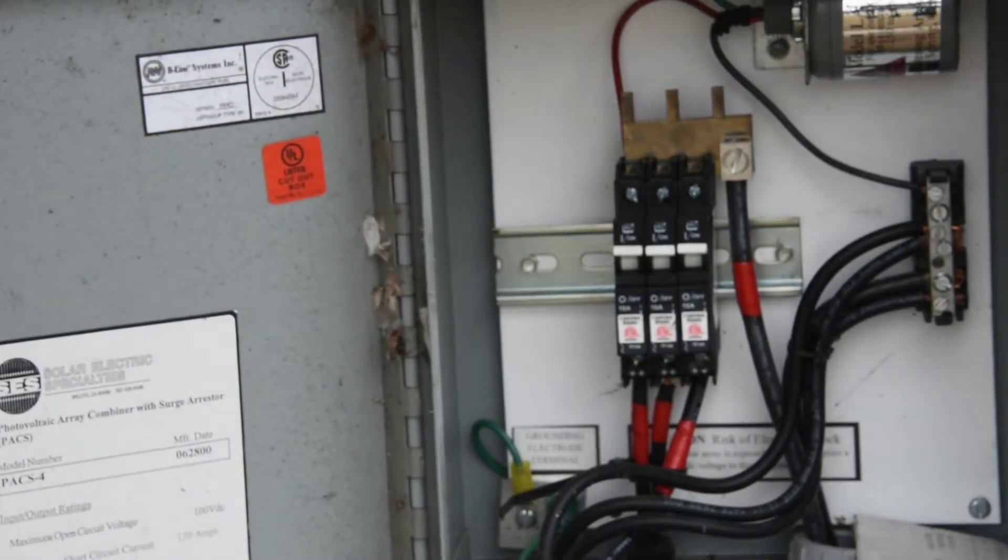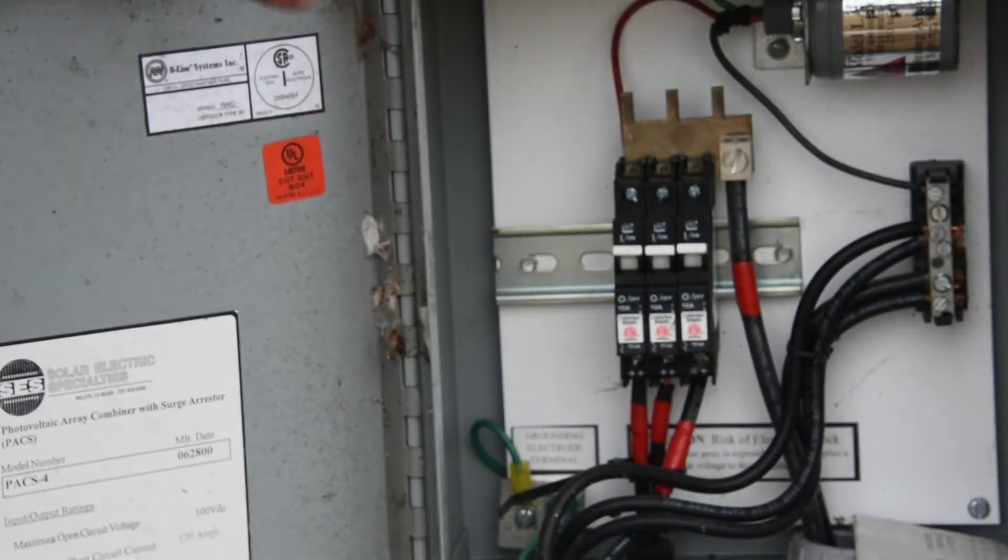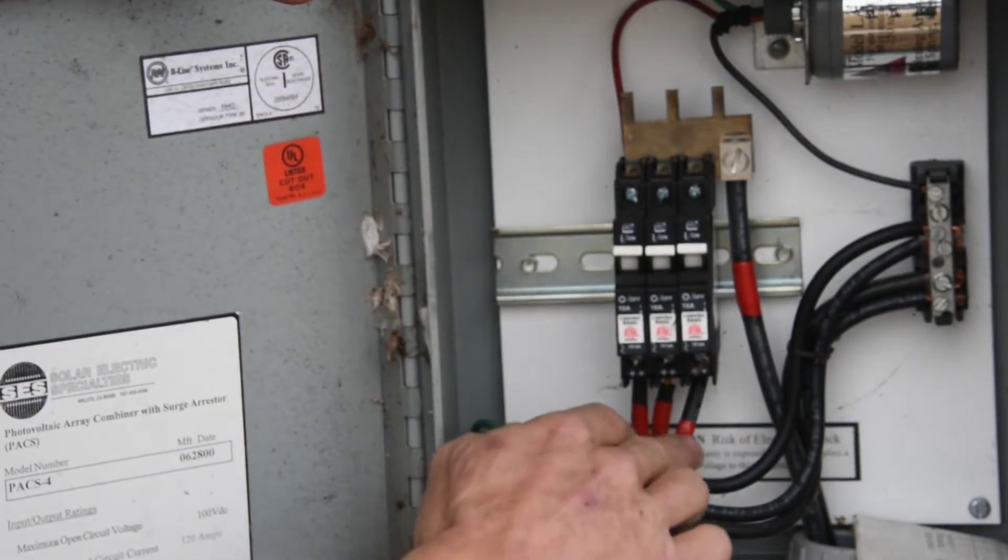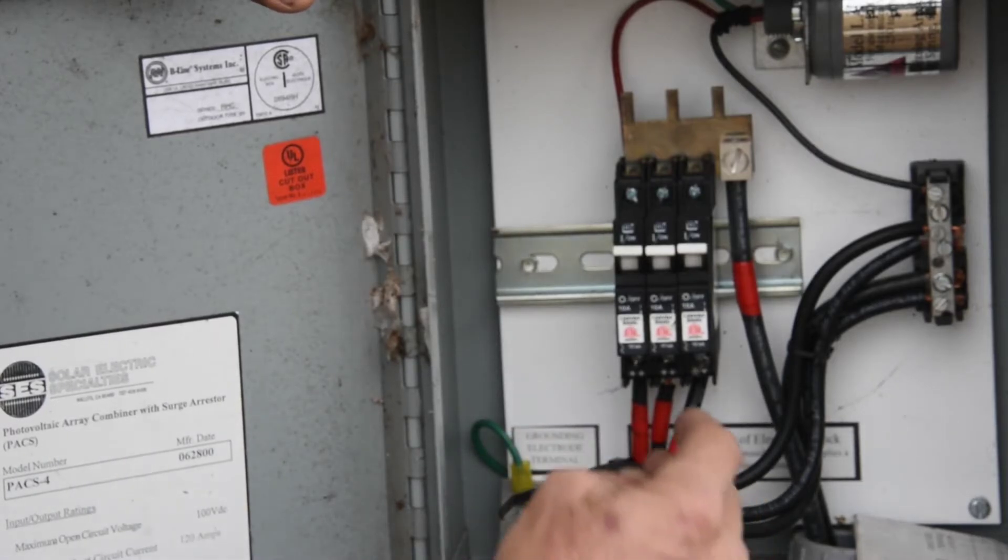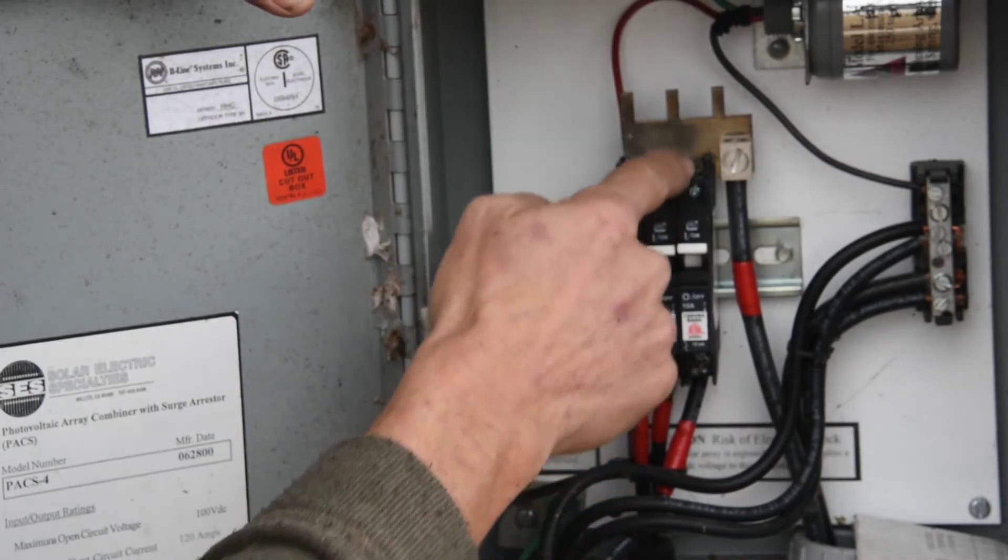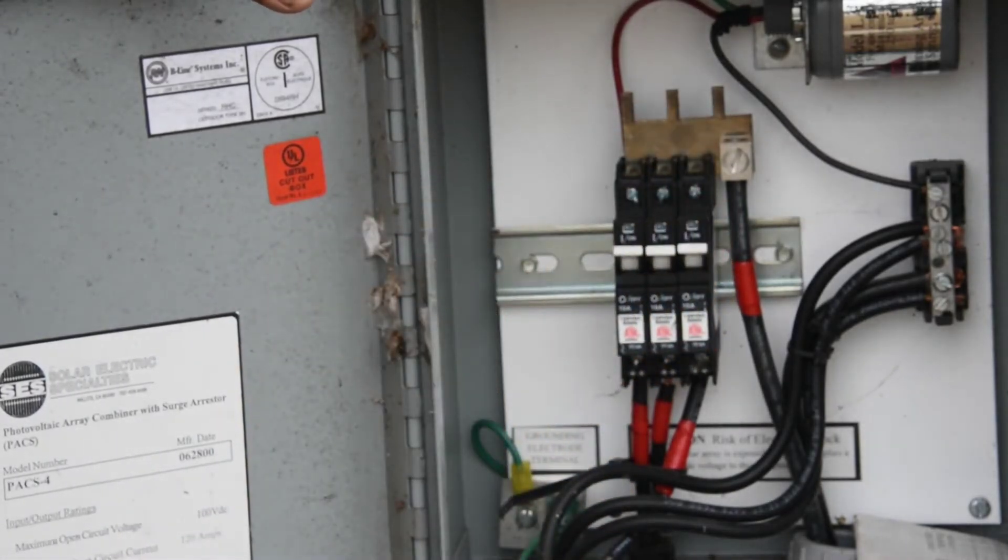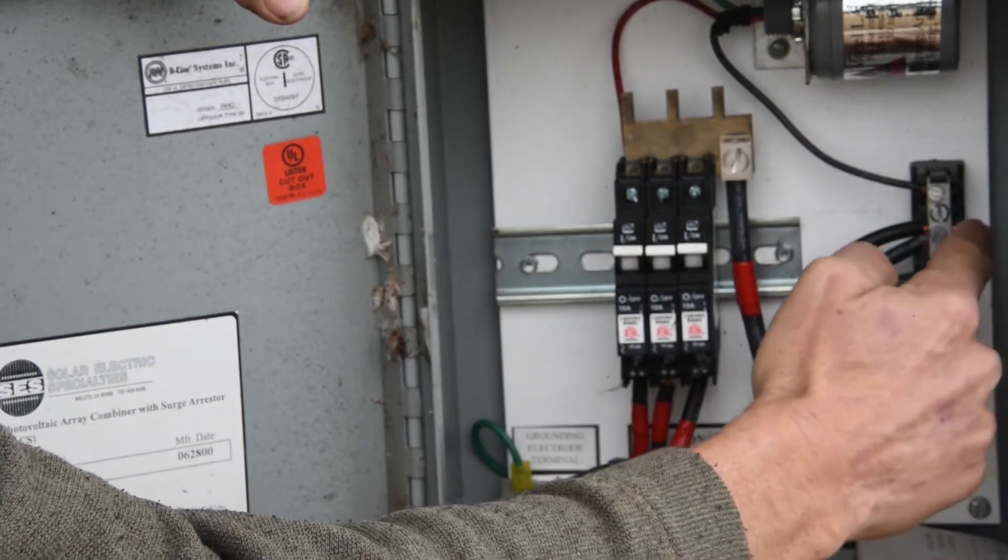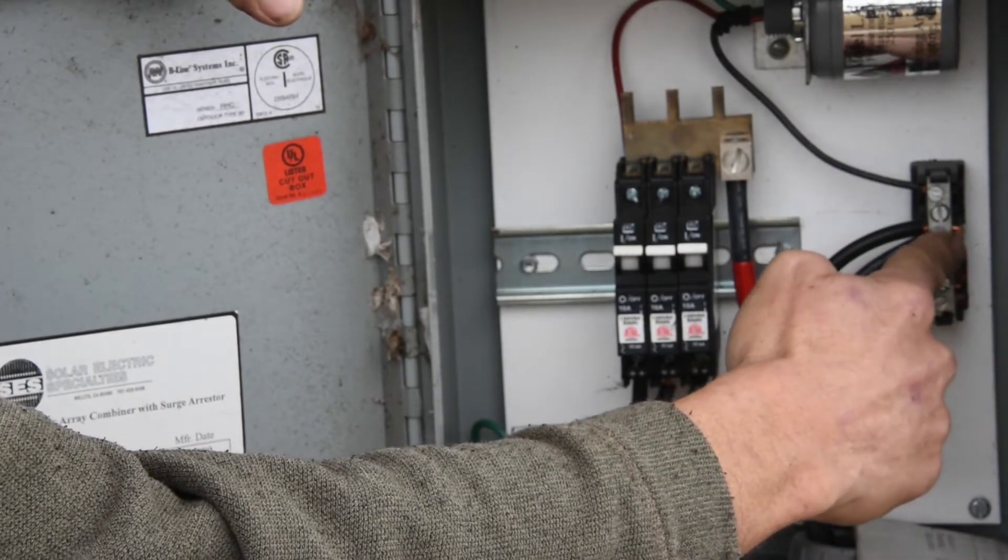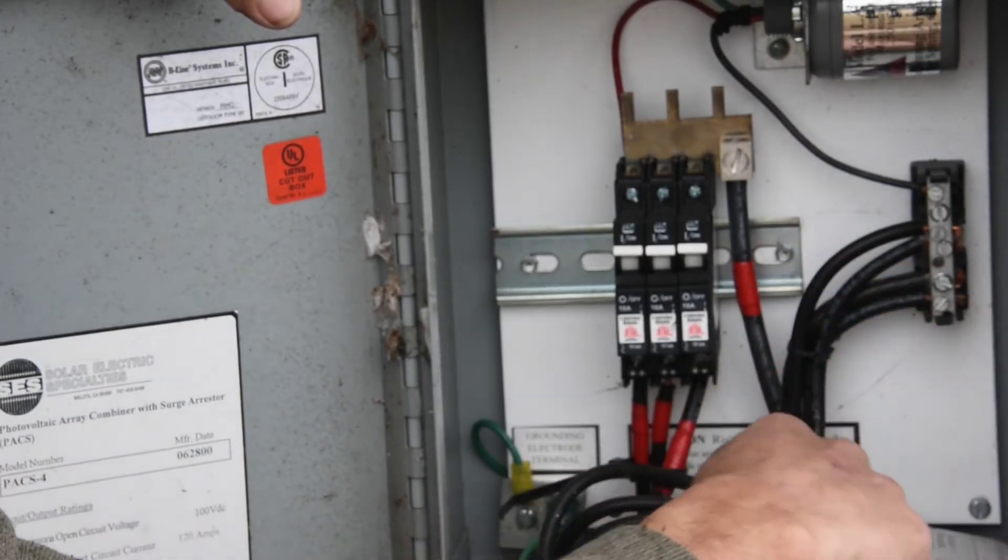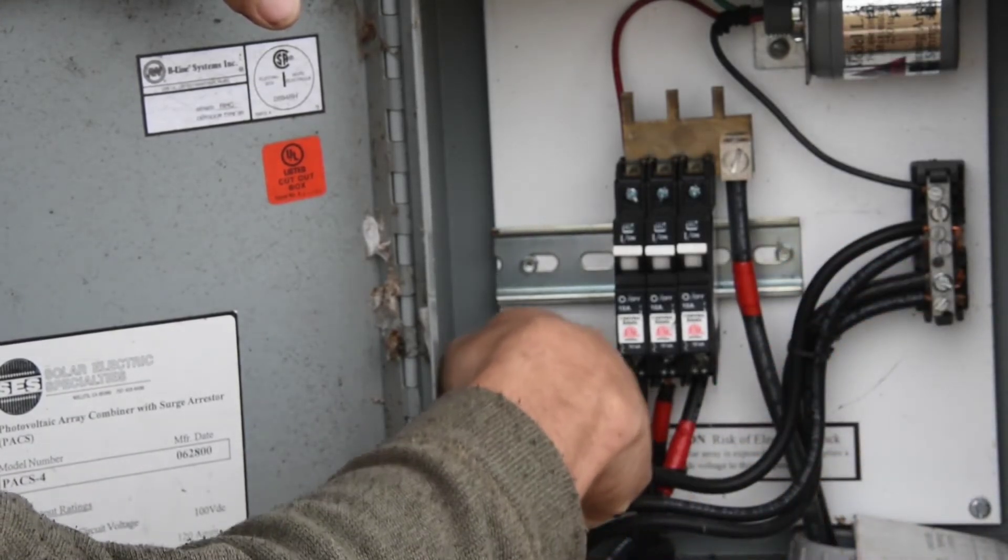Okay, we had a viewer that wanted to see the combiner box. So this is the combiner box for one of our solar trackers. This is our three positive wires coming in from the solar panels coming in. They're being paralleled here with this connector and a single wire going back. This is our negative from all the solar panels coming in here going back. This is our ground down here on the back plate.